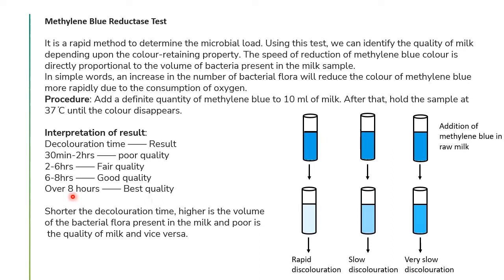If it took 6 to 8 hours for color disappearance, the quality of milk is very good or best. If only 30 minutes to 2 hours were required, it shows the milk is of poor quality. Shorter decoloration time means a higher volume of bacterial flora present in milk and poorer milk quality, and vice versa. You can monitor the color using a stopwatch and interpret the results accordingly.